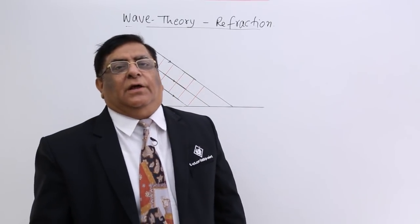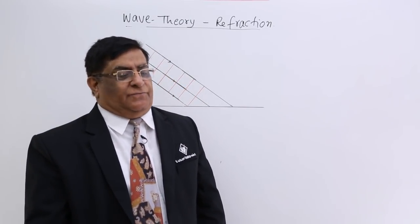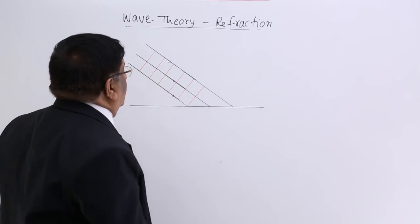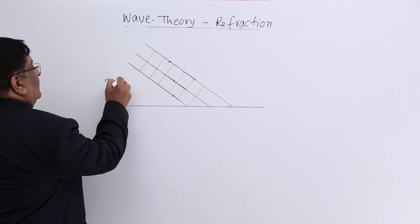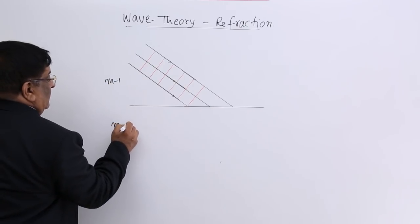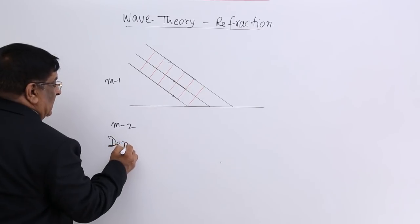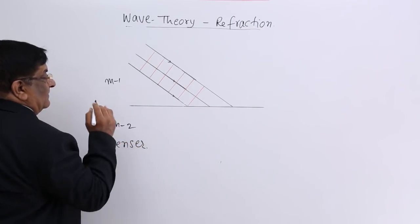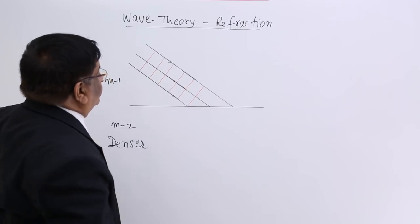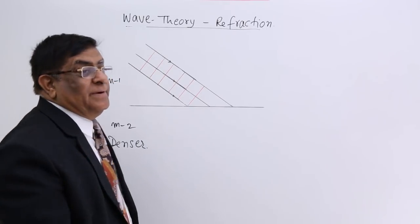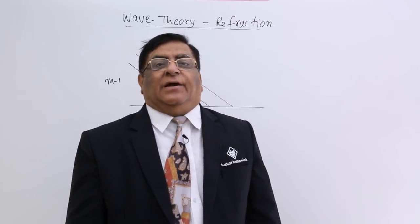Now we will study the refraction laws explained by wave theory. This is the interface between two media. This is medium 1 and medium 2, and for this example we will suppose that medium 2 is a denser medium. In a denser medium, the velocity of light becomes less — it slows down.